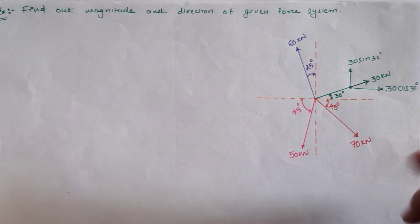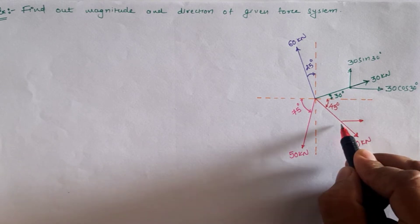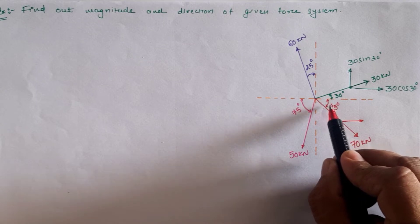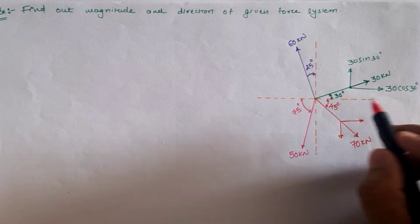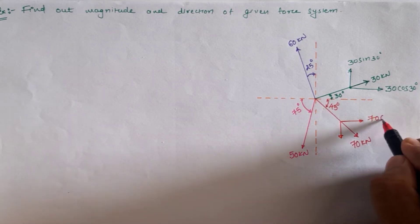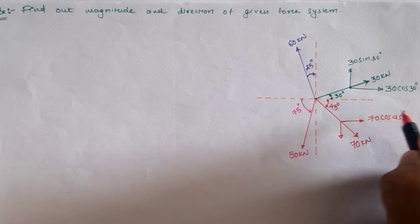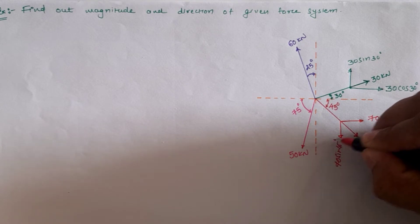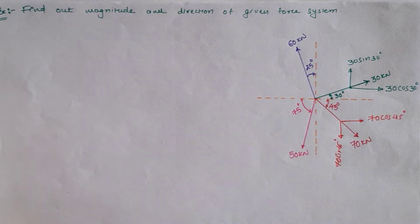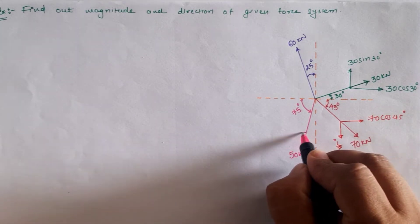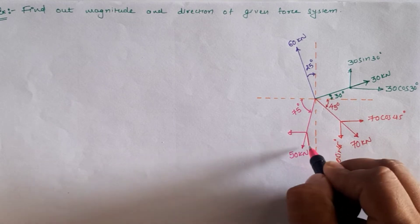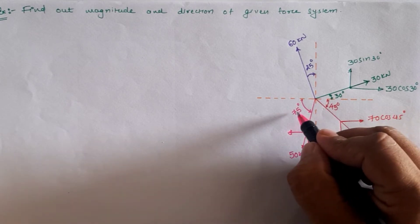Now focusing on the 70 kilonewton load: it has a horizontal resolution and a vertical resolution. The 70 kilonewton load makes an angle of 45 degrees with the horizontal, so it is 70 cos 45 as the horizontal component and 70 sin 45 as the vertical component.